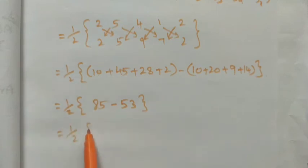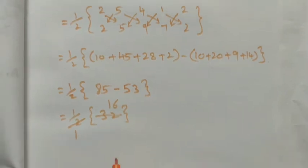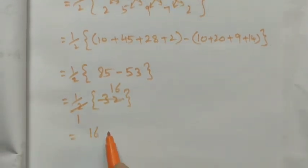So minus 53. There is no negative value, so plus into minus we get minus. Minus 53, if you subtract this term we get 32. 5 minus 3 is 2, 8 minus 5 is 3. 32 here, divide the terms: 2 into 32 is 16. So the area of the total cost is 16 square units.